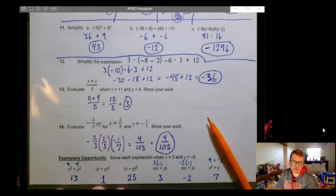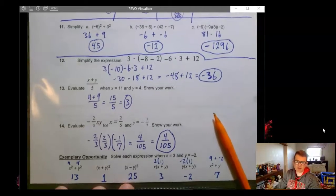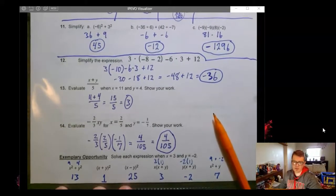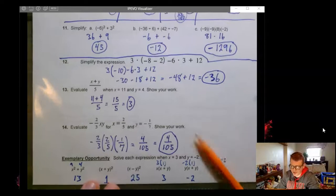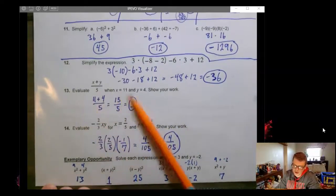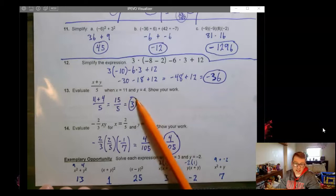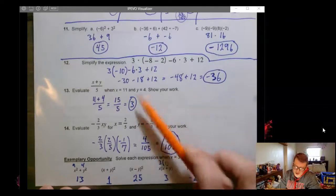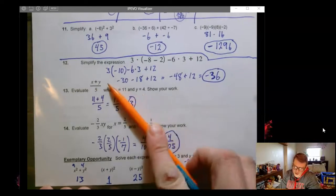And then 13 and 14, these are kind of like bonuses. You know, there aren't really bonus problems at Phoenix. But I just wanted to see how you guys would handle these. So evaluate when we have other values. So like when we need to substitute. So we substitute in 11 for X and 4 for Y.